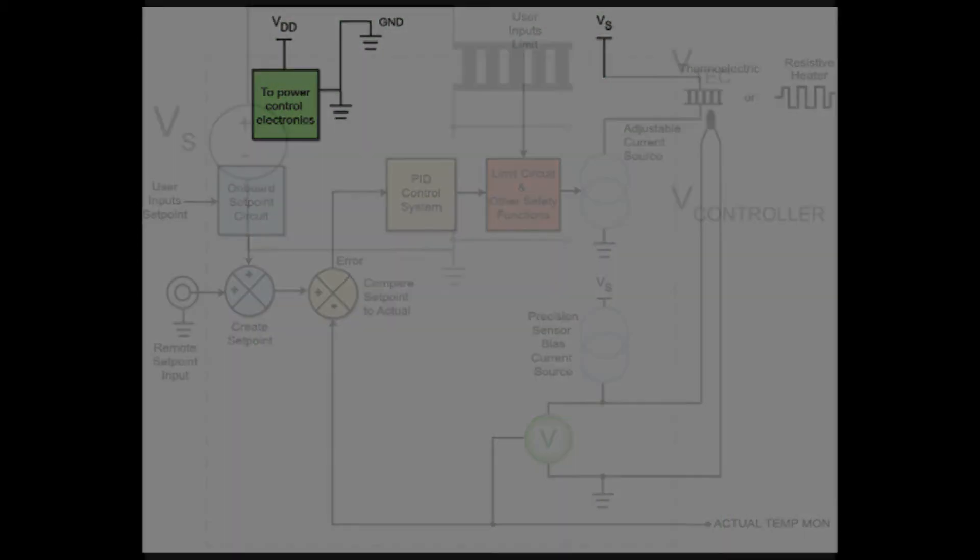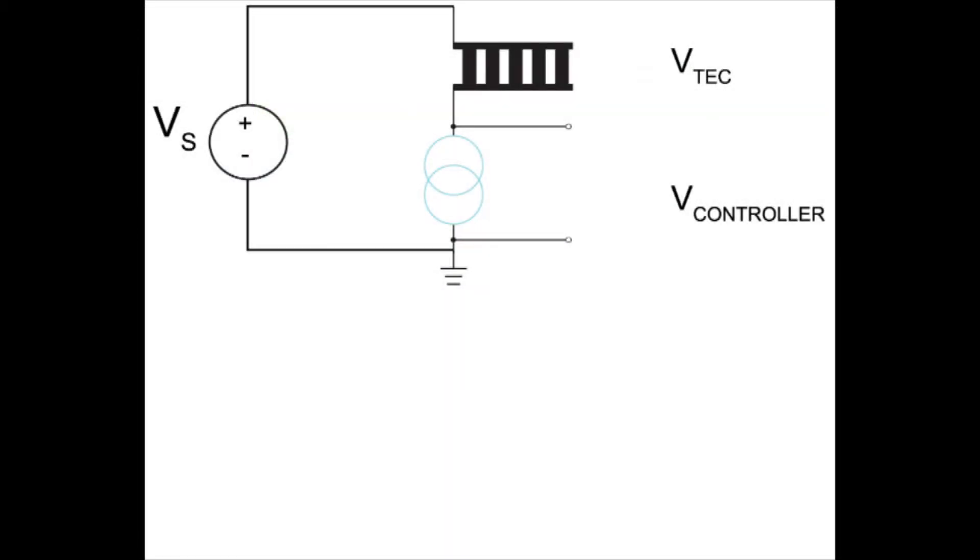Some of the power goes to the thermoelectric or resistive heater, while the rest must be dissipated by the temperature controller. Past the maximum internal power dissipation, thermal damage to internal electronic components is possible.